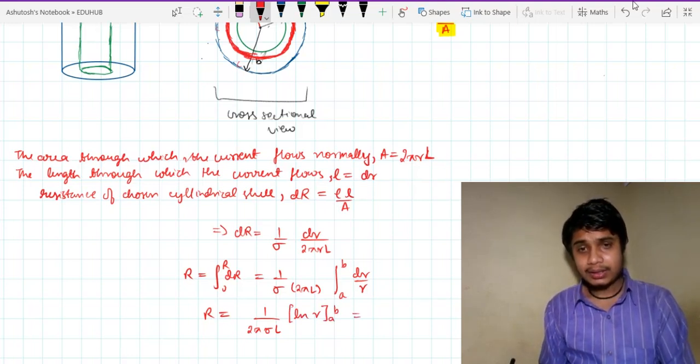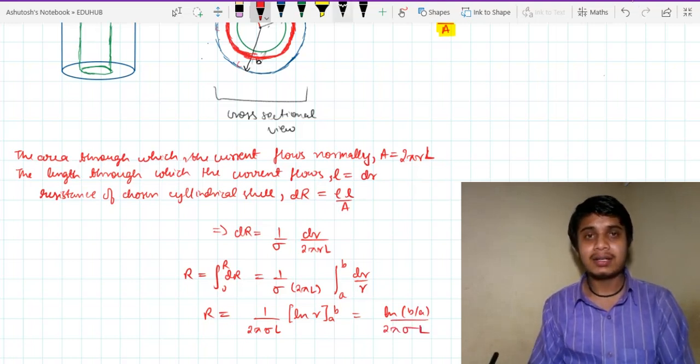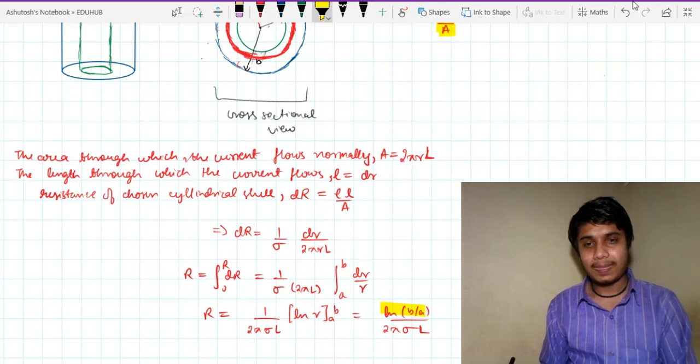What I can write it as ln of b over a upon 2 pi sigma L and here is our answer. So this is the resistance of this whole system.